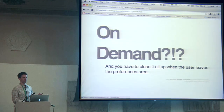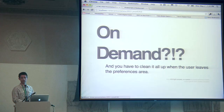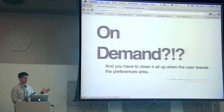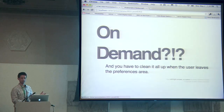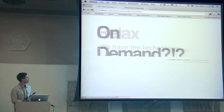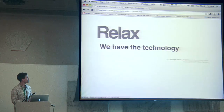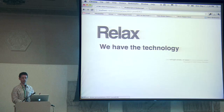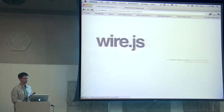Not only do you have to create it all, you have to clean it all up. When the user clicks Save or Cancel in their preferences, you have to destroy all those DOM nodes, get them off the screen, free all your objects, make the browser happy. So can we automate or make this process easier? That's what wire.js aims to do.